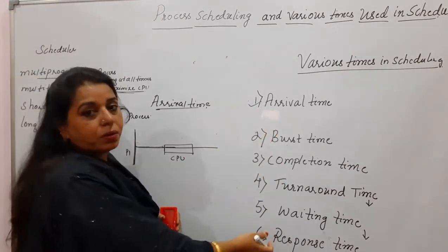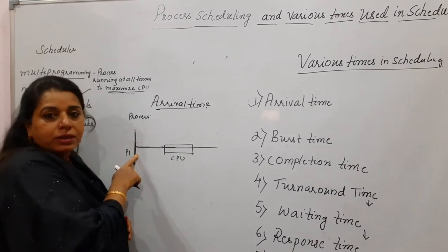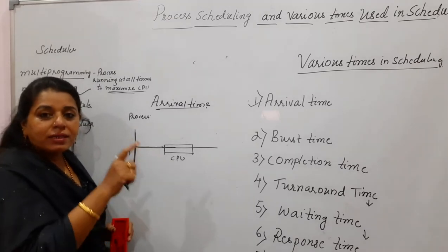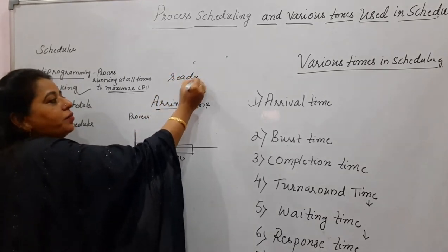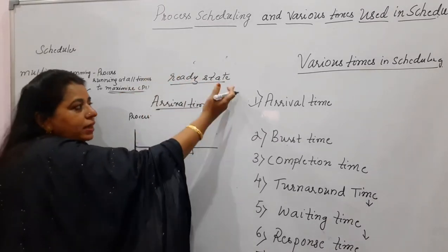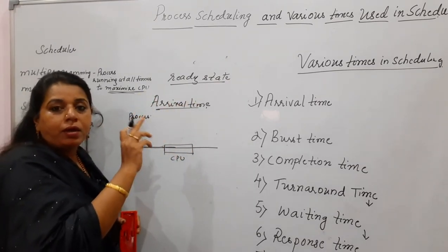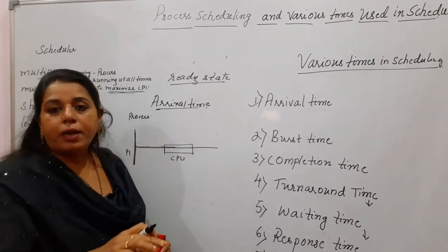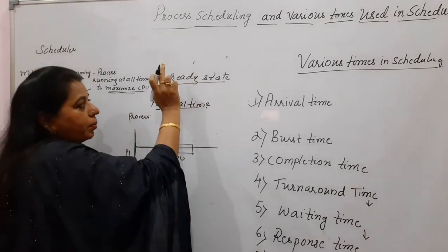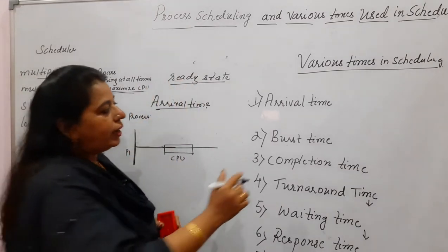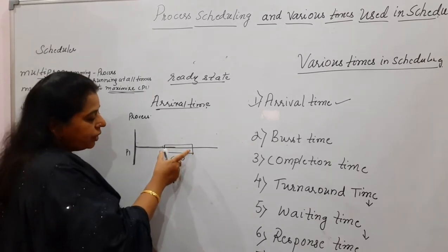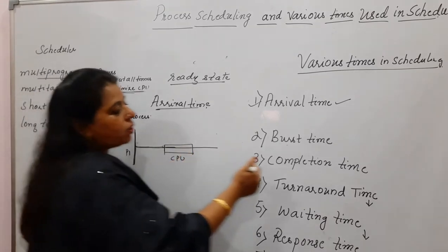With this diagram you can identify the different times. Arrival time is the time at which the process enters the system, that is, the time at which it is brought into main memory and is in the ready state. From the ready state it goes to the running state, which means getting the CPU allocated to that process for execution. The time at which the process is in the ready state is called the arrival time.